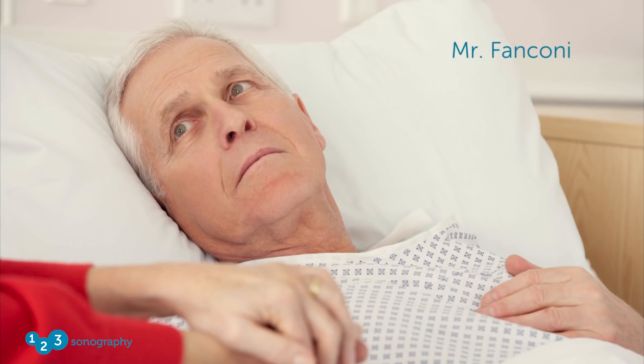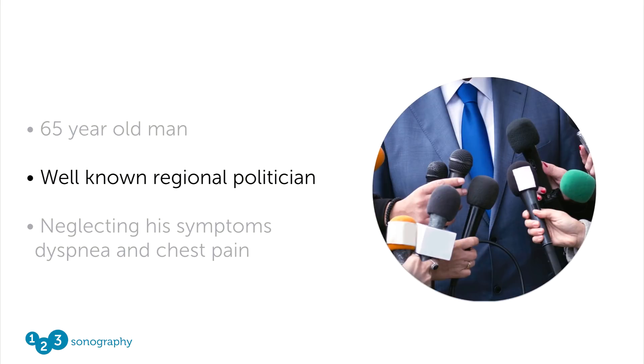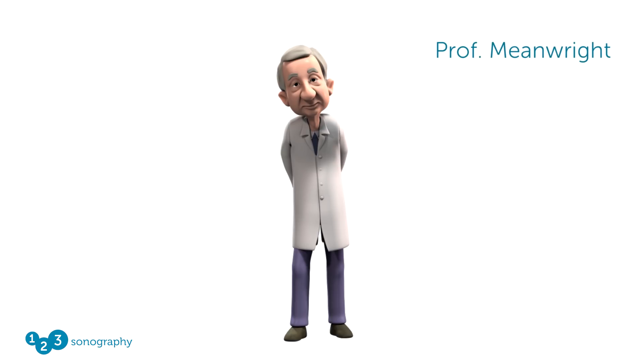Mr. Fanconi is Scott's patient. He's a 65-year-old man, a very well-known regional politician — a VIP person — who has been neglecting his symptoms of chest pain and dyspnea for several months. Now let's come to the third character: Professor Meanright, Scott's boss. He's quite demanding and is expecting Scott to make the right diagnosis on this very important person.